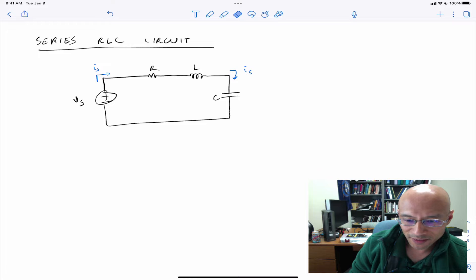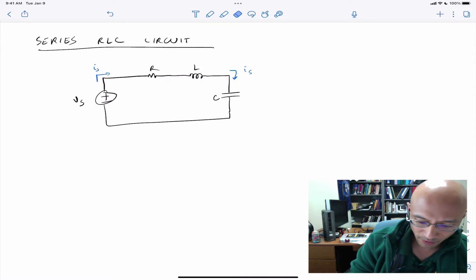So what's special about this is now we have two energy storage elements. They're irreducible. There's no way we can combine them into one. And so that leaves us with a situation where we're going to get a second order differential equation. So let's get started.